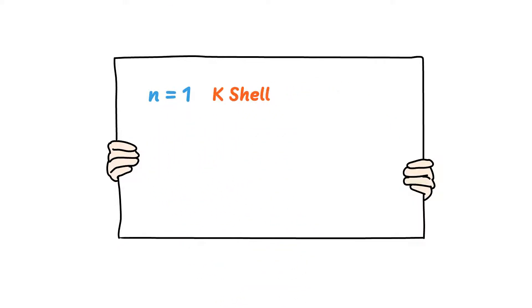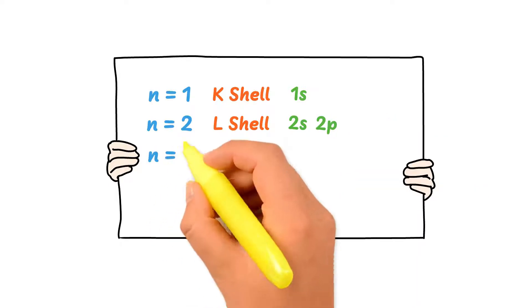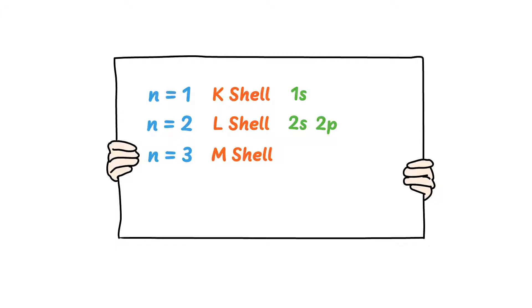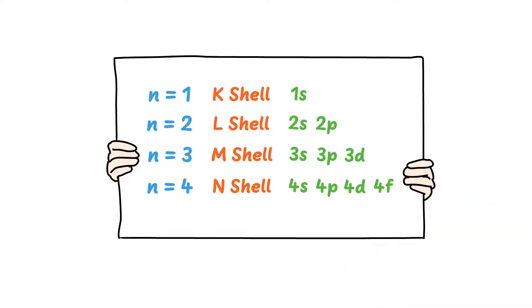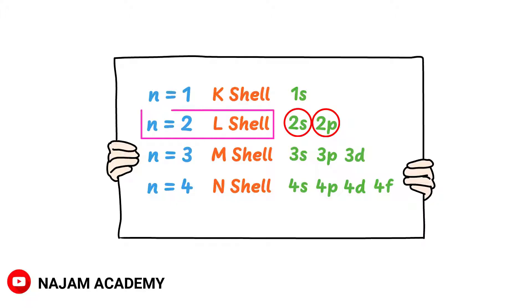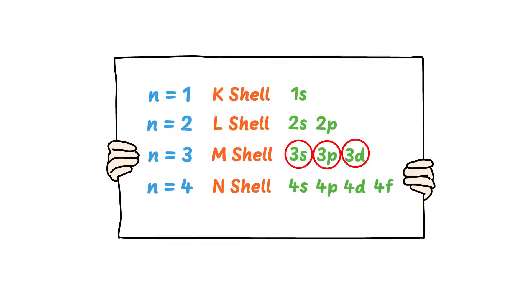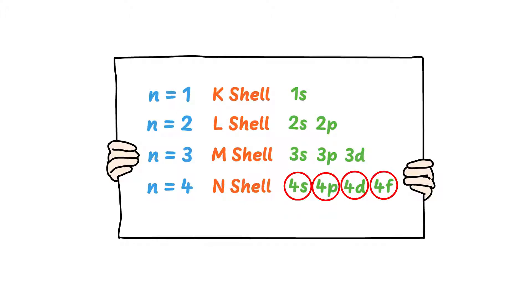We learned in the previous video that when n=1 it is the K shell and has 1 subshell: 1s. When n=2 it is the L shell with subshells 2s and 2p. When n=3 it is the M shell with subshells 3s, 3p, and 3d. When n=4 it is the N shell with subshells 4s, 4p, 4d, and 4f. So 1s belongs to the K shell, 2s and 2p to the L shell, 3s, 3p, 3d to the M shell, and 4s, 4p, 4d, 4f to the N shell.